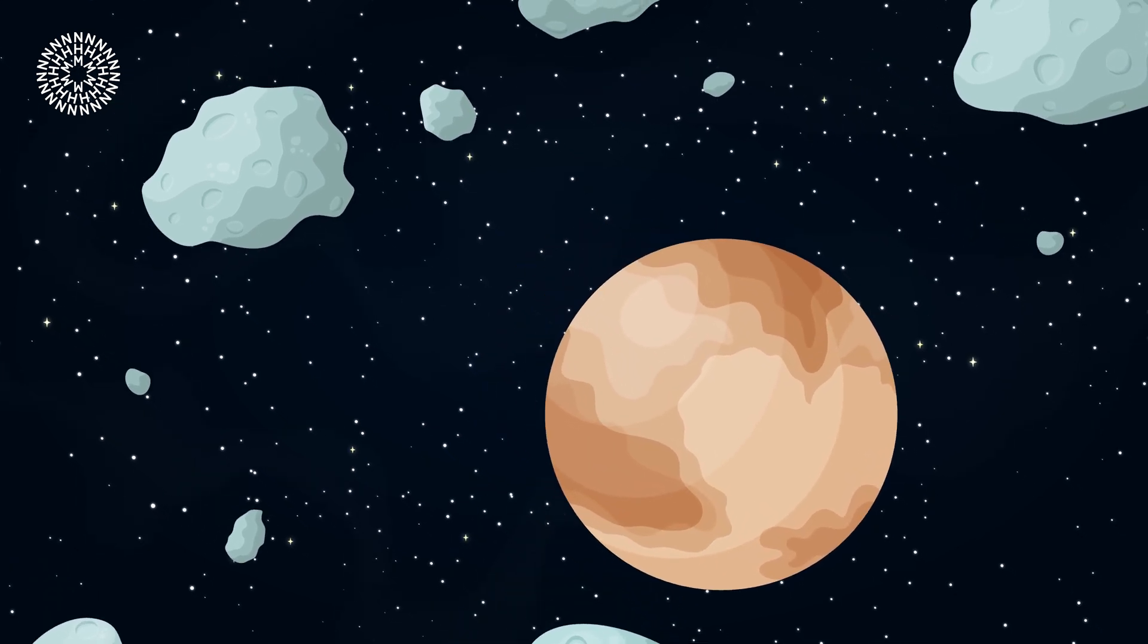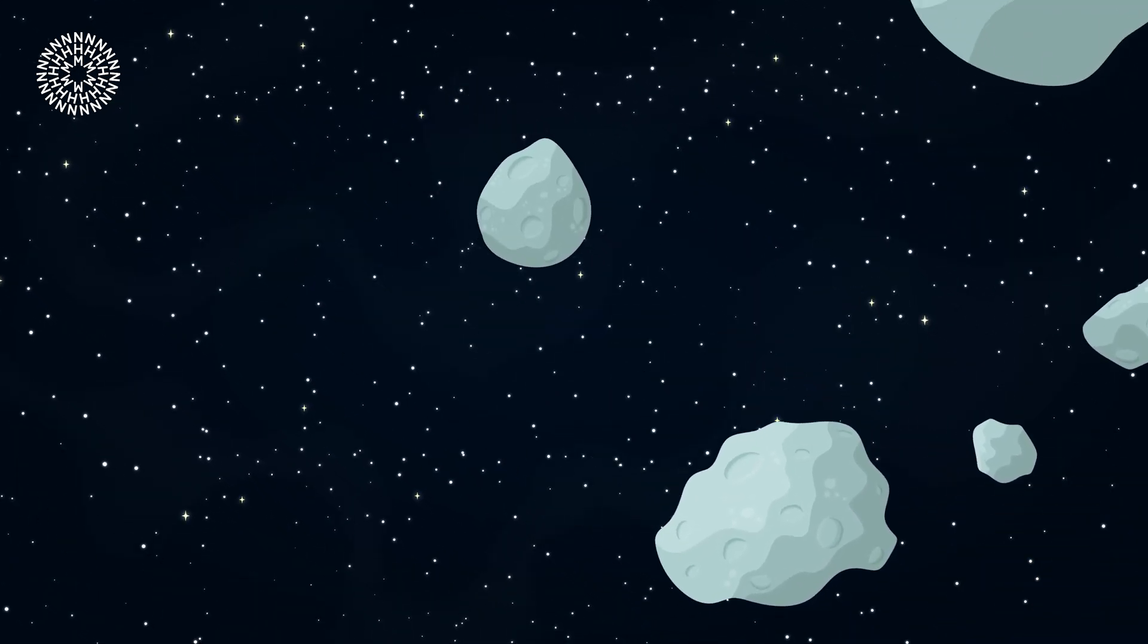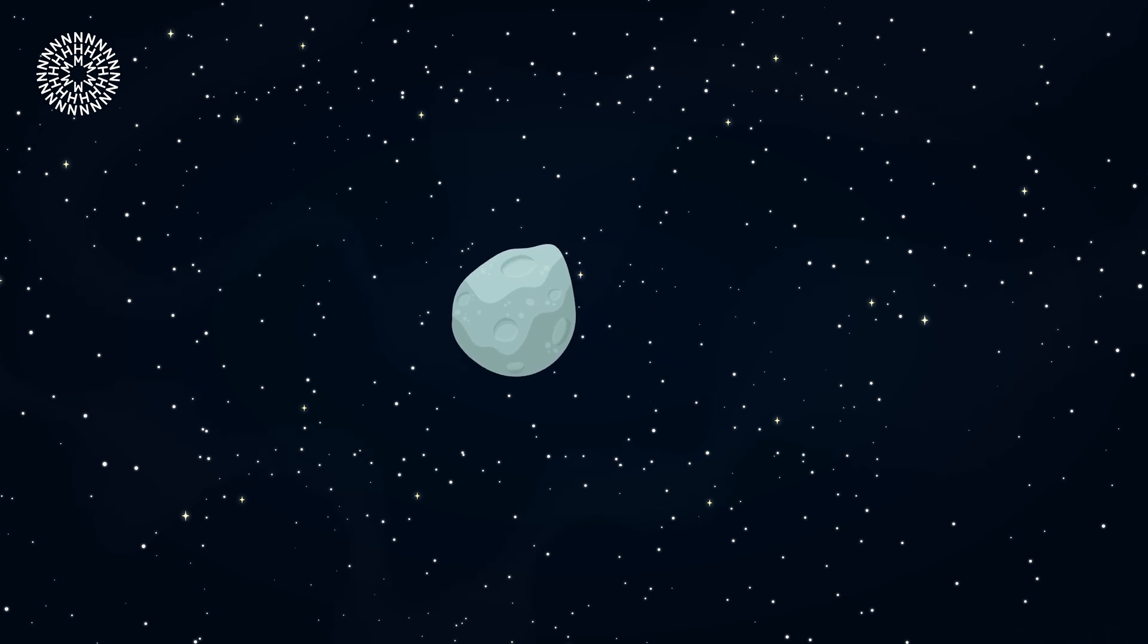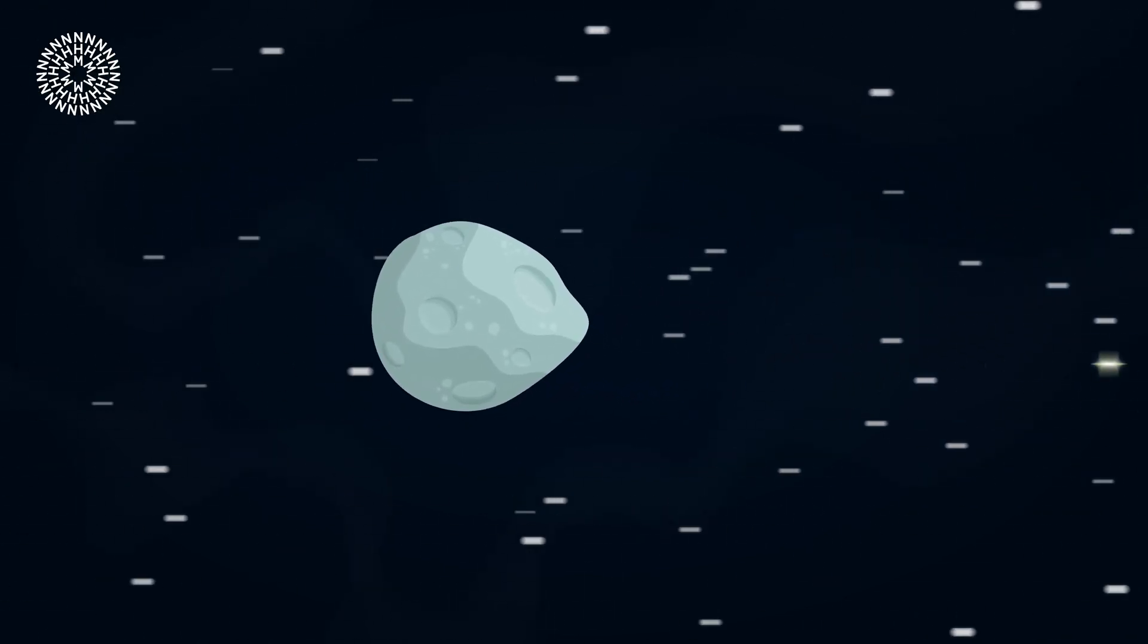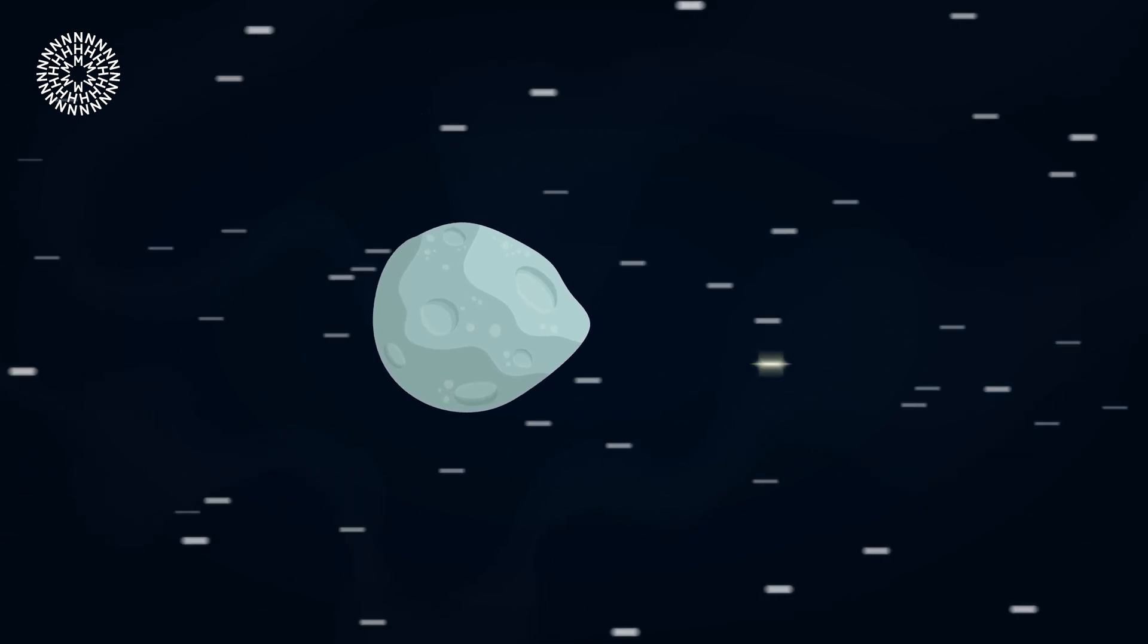The gravity of a giant planet or a nearby star can pull these icy objects away from the Kuiper belt and redirect them towards the sun, getting faster and faster and faster.